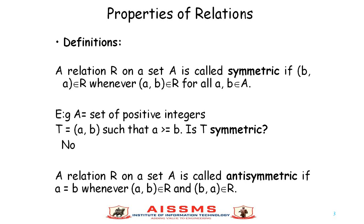A relation R on set A is called antisymmetric if whenever (A, B) belongs to R and (B, A) belongs to R, then we can say A is equal to B, and at that point the relation is antisymmetric.